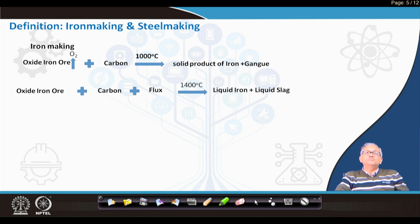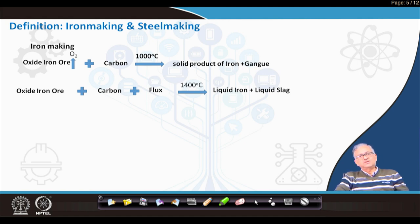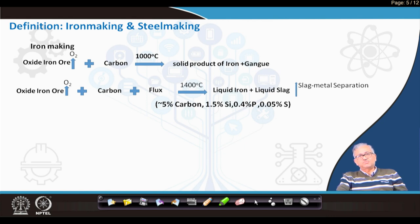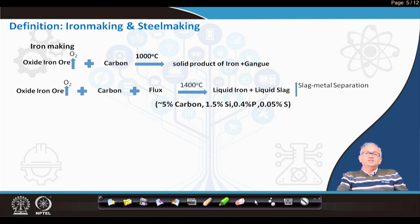Unlike the first process where only oxygen is removed and all gangue remains, in this second process at higher temperature with flux you can remove the gangue as liquid slag. The typical composition of the resulting hot metal is around 4–5% carbon, 1–1.5% silicon, 0.4% phosphorus, and 0.05% sulfur. Since blast furnace conditions are highly reducing, sulfur can be effectively removed under these reducing conditions.